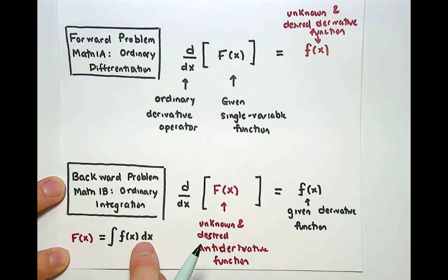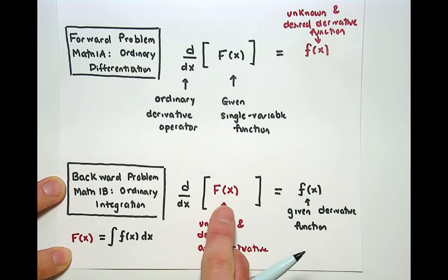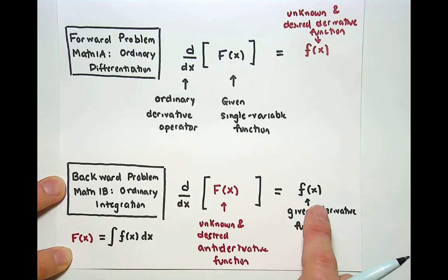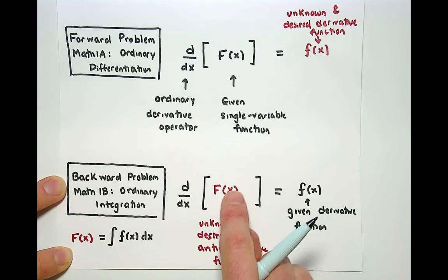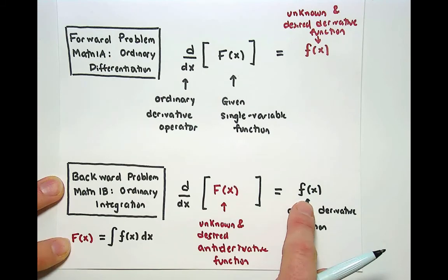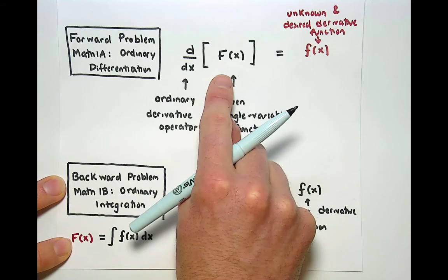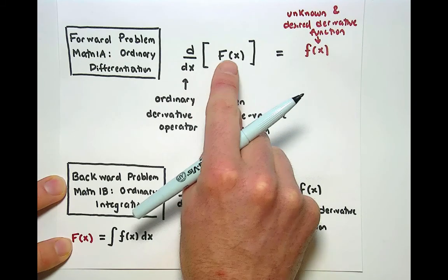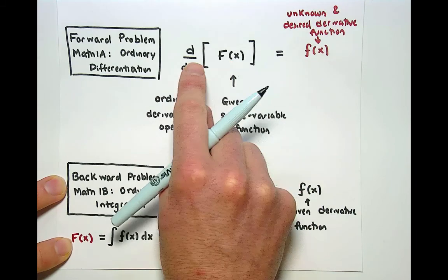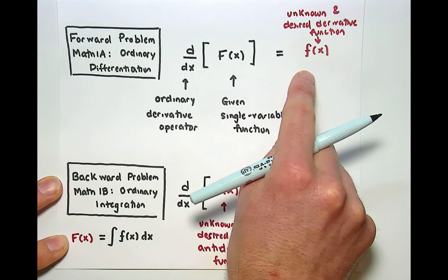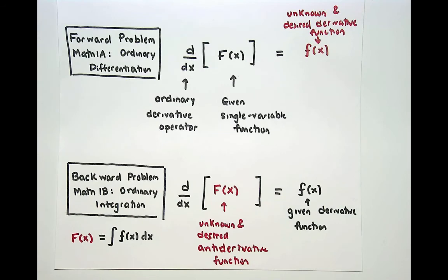The fact that it was ordinary or single variable means that there's only one variable involved. However these are identical problems. This one is written as a backward problem in the sense that I'm giving you the output and I'm asking you to find the input to the differentiation operator that produces that output. Here is the forward problem because I'm giving you the input. You take the derivative and then you find the output.